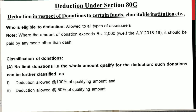Important deduction under Section 80G deals with donations to certain funds and charitable institutions. If an individual gives donations or contributes money to any charitable institution, such an amount is available as a deduction under Section 80G. All types of assessees are eligible — individuals, partnership firms, and companies.